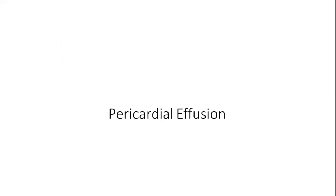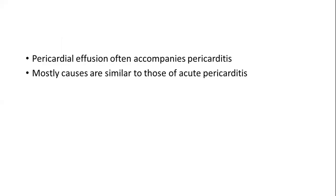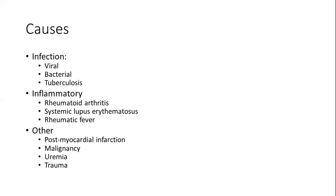After acute pericarditis, we need to understand pericardial effusion. Pericardial effusion means the collection of a large amount of fluid in the pericardial space — normally 50 to 60 ml is present. Ongoing pericardial inflammation leads to increased fluid secretion and collection, which we call pericardial effusion. It usually accompanies pericarditis, and the causes are similar — viral infection, bacterial infection, tuberculosis, inflammatory causes, malignancy, uremia, trauma, and post-myocardial infarction.